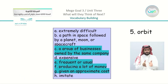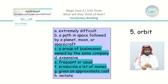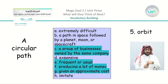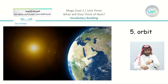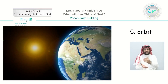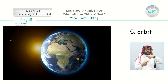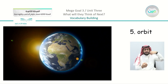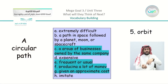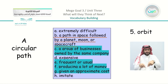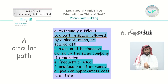Moving on to number five: 'orbit.' It is a short, simple word. I can show you something clear — it is a circular path. Here you can see that Earth orbits around the sun, and so do all the planets. So obviously it means: a path in space followed by a planet, moon, or spacecraft.